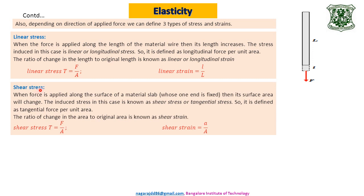The second type is shear stress. When force is applied along the surface of a material slab whose one end is fixed, its surface area changes. The induced stress is known as shear stress or tangential stress, defined as tangential force per unit area. Note the difference: earlier, force was applied along the length (linear force); here, force is applied along the area (tangential force). Tangential force per unit area is tangential or shear stress, written as F/A, but here F is tangential force.